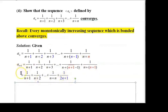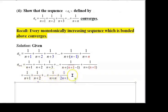Thus, aₙ₊₁ = 1/(n+1) + 1/(n+2) + ... + 1/(n+n) + 1/(2n+1). Now we have to find the difference aₙ₊₁ minus aₙ.